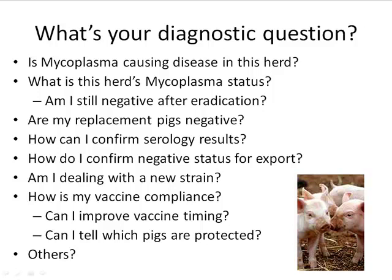Regarding vaccine compliance via ELISA: I generally say no — individual antibody titers don't necessarily correlate to protection. I wouldn't go to court for someone claiming their stockmen didn't vaccinate based on ELISA titers, because the assay isn't meant for that. Some vaccines and dose regimens are more easily detected, and in challenge studies we see titer changes after vaccination and boosting at infection, but it's not one-to-one.